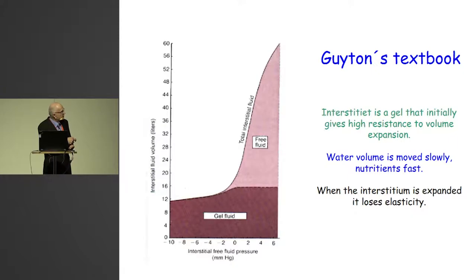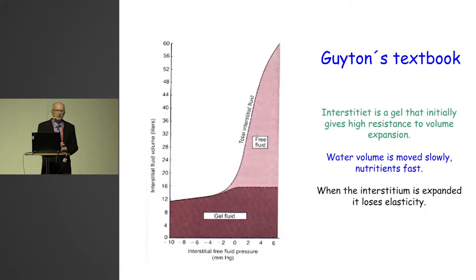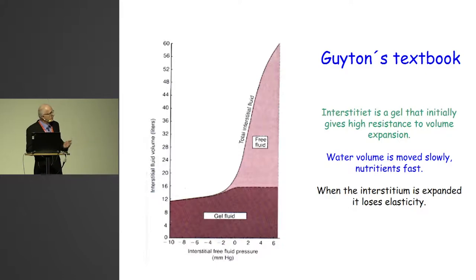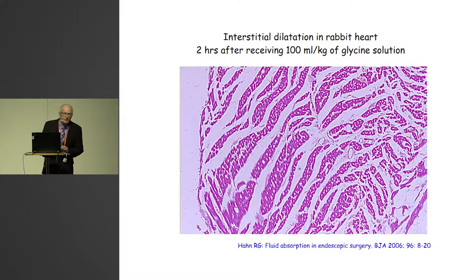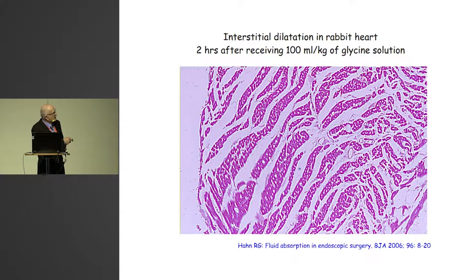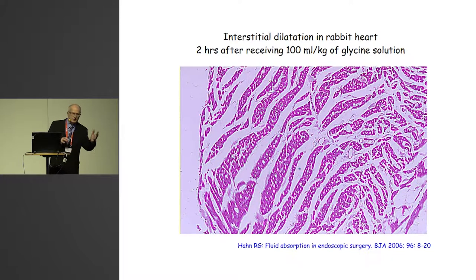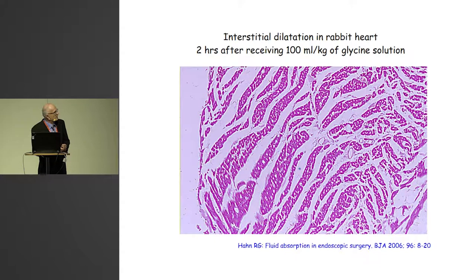When we have expanded the interstitial fluid space, the volume increases and the fluid pressure is no longer negative — it becomes positive. That opens up for a lot of fluid to pass into the interstitial space. It will end up something like what is shown here. It's an animal study from the 90s I was involved in — a rabbit heart with glycine, but it looks the same regardless of what fluid we give. You can see myocardial fibers and also lacunae of water that sort of tear the tissue apart, and of course that affects cardiac function.